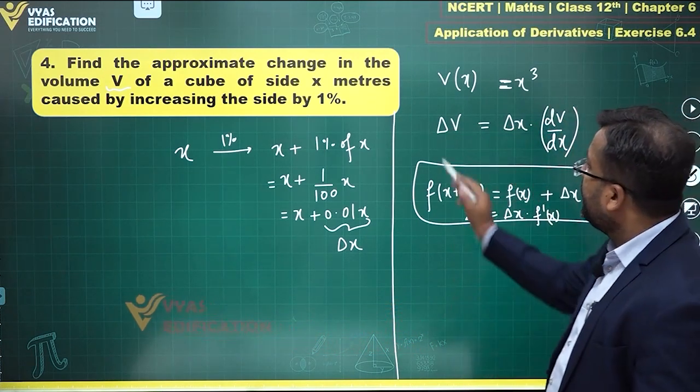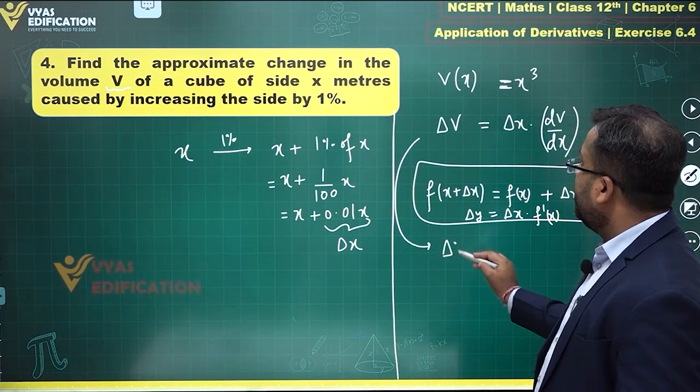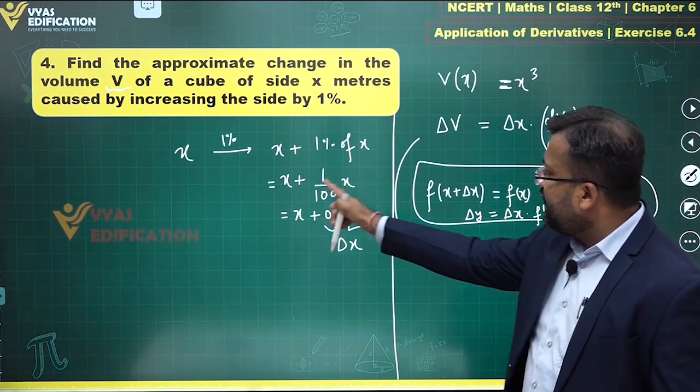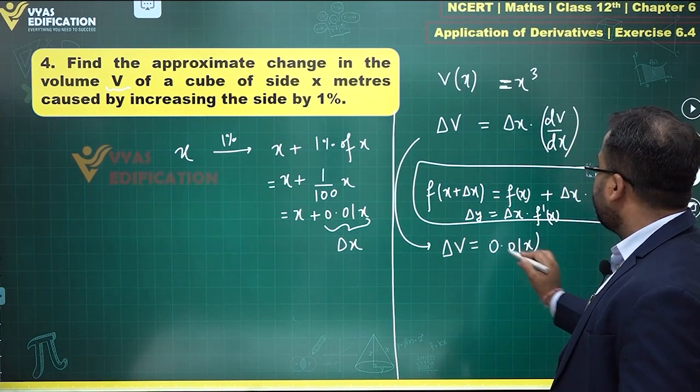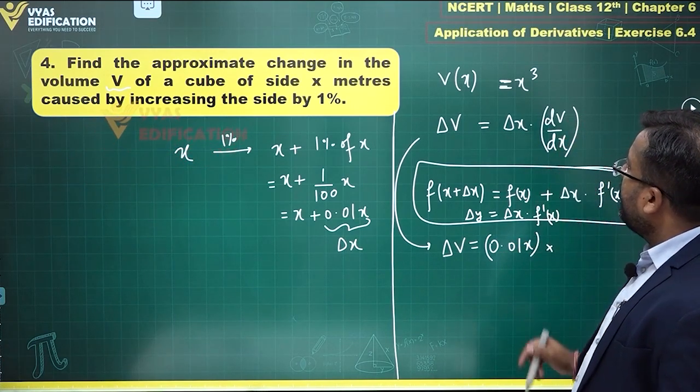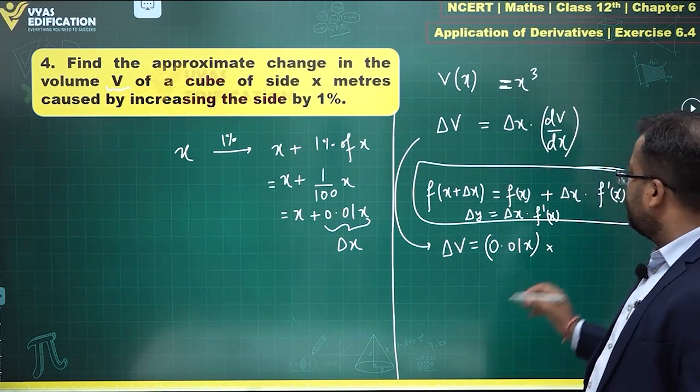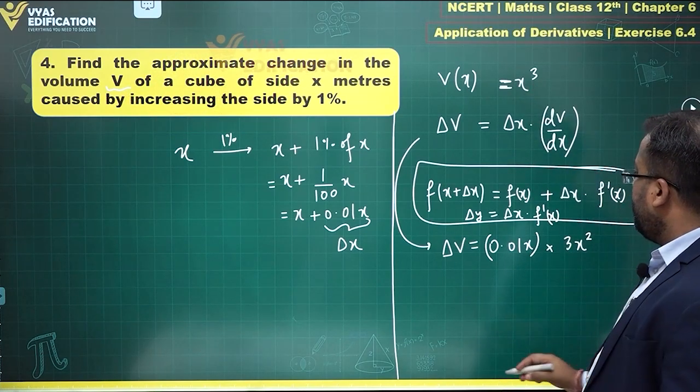Right. On the basis of this, we can say that ΔV is equal to Δx. What is that Δx? Δx is 0.01x times the derivative of V with respect to x. What is that? 3x².